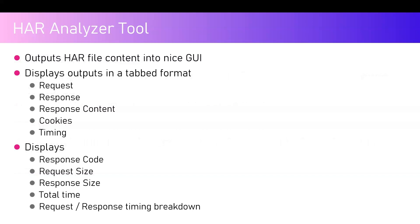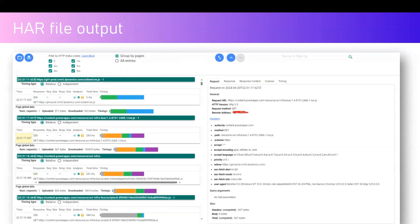For that we need something called a HAR Analyzer tool. What a HAR Analyzer tool does is output the HAR file content into a nice graphical user interface in a tabbed fashion. In a web request you have a request and a response from the server — a response code, response content, cookies, timing information — and all those things get displayed in a tabbed format. It displays response code, request size, response size, total time, and a request/response timing breakdown.